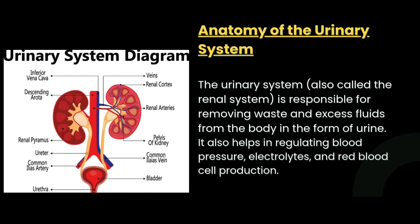First, we have to start with the definition. The urinary system, also called the renal system, is responsible for removing waste and excess fluids from the body in the form of urine. It also helps in regulating blood pressure, electrolytes, and red blood cell production.